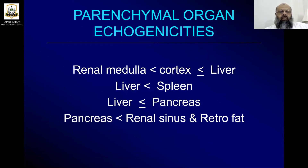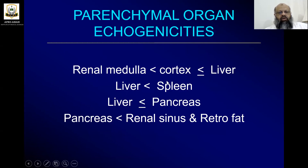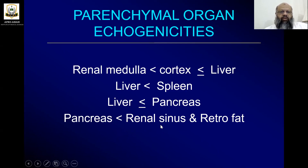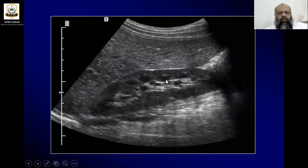When looking at parenchymal organ echogenicities, the renal medulla is hypoechoic compared to the cortex of the kidney. The cortex of the kidney is hypoechoic compared to liver parenchyma. The liver parenchyma is hypoechoic compared to the spleen. The liver is also hypoechoic compared to the pancreas, which appears more echogenic and whitish. The pancreas is less echogenic than the renal sinus and retrorenal fat. The medullary pyramids are more hypoechoic compared to the cortex, and the cortex is more hypoechoic compared to the liver.